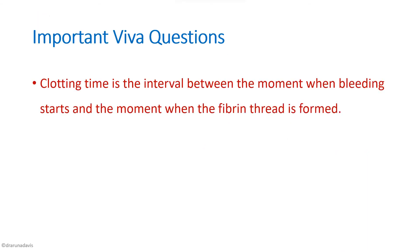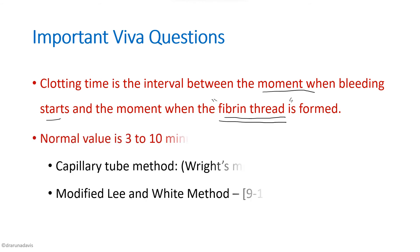An important viva question for clotting time is its definition. Clotting time is the interval between the moment bleeding starts and the moment a fibrin thread is formed — unlike bleeding time, which ends when bleeding stops. The normal value is 3 to 10 minutes. There are two methods: the capillary tube method, also called Wright's method, and the modified Lee and White method. You can remember them as Wright's method and White's method.